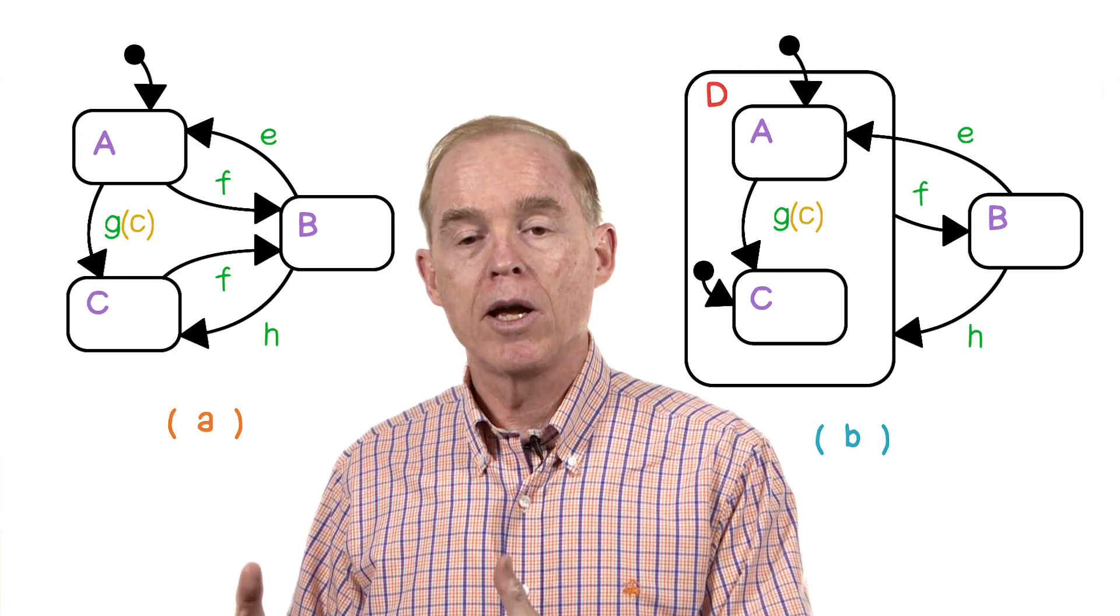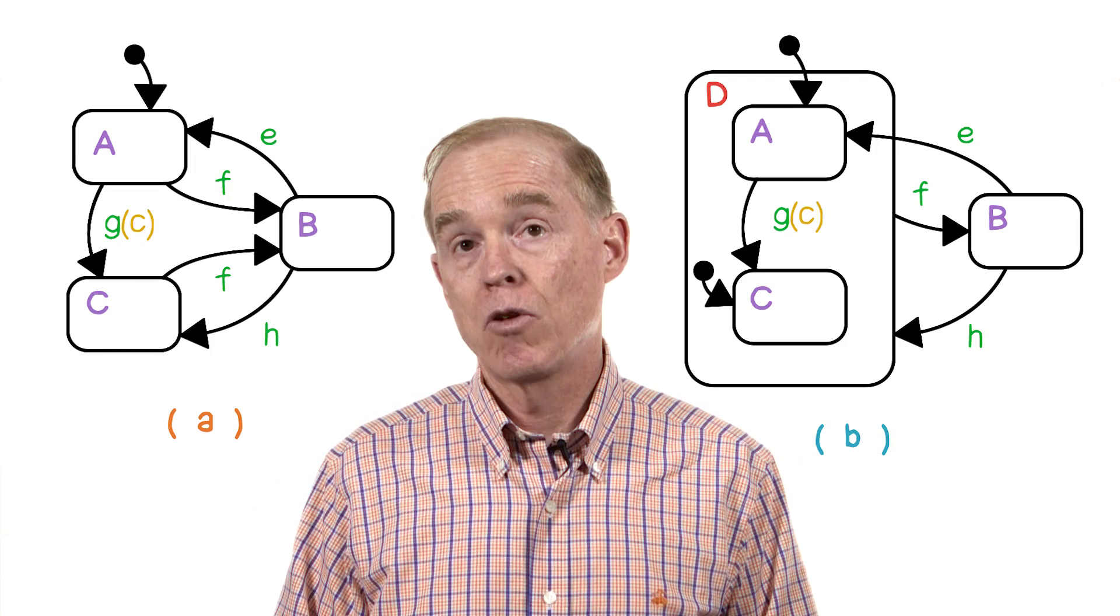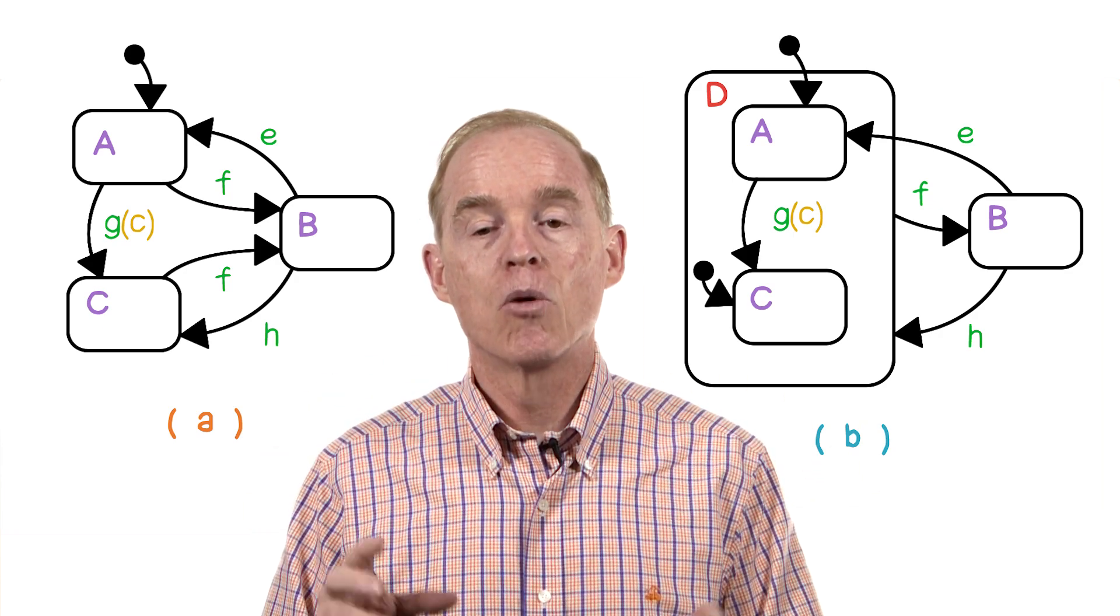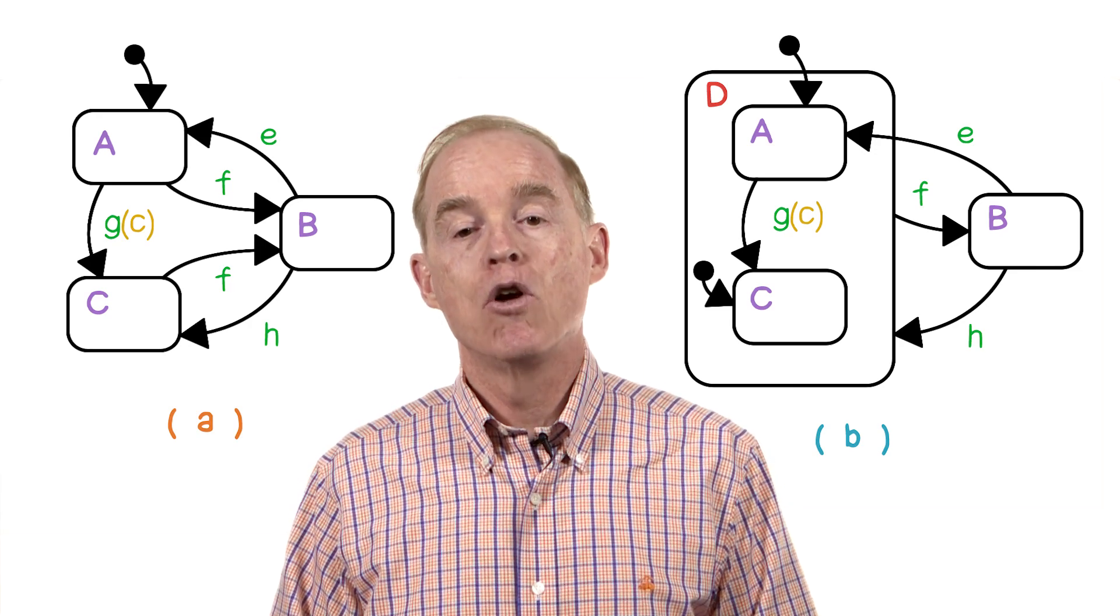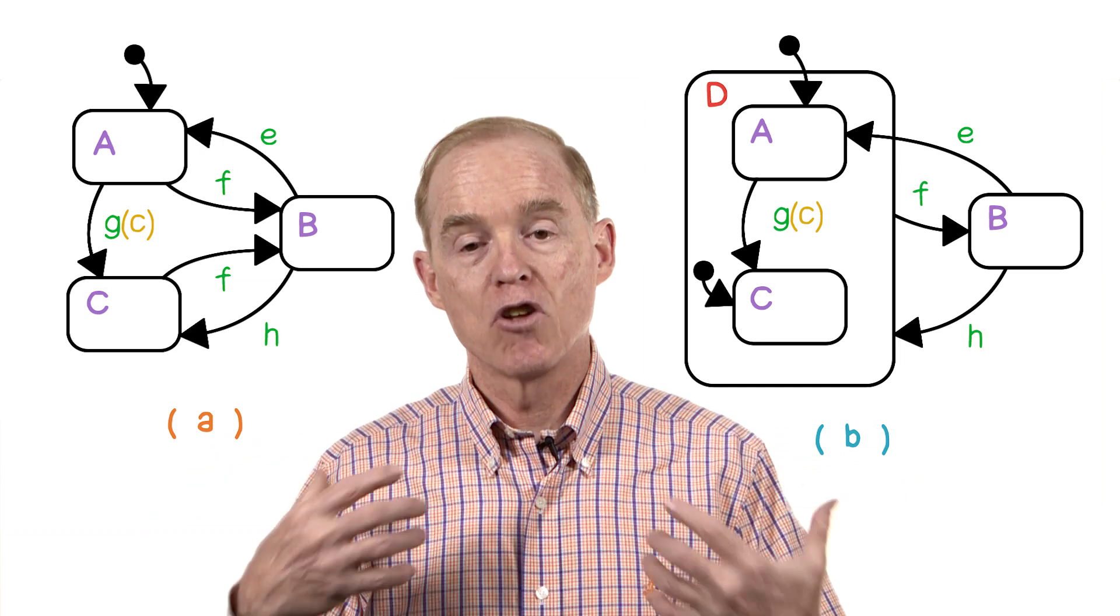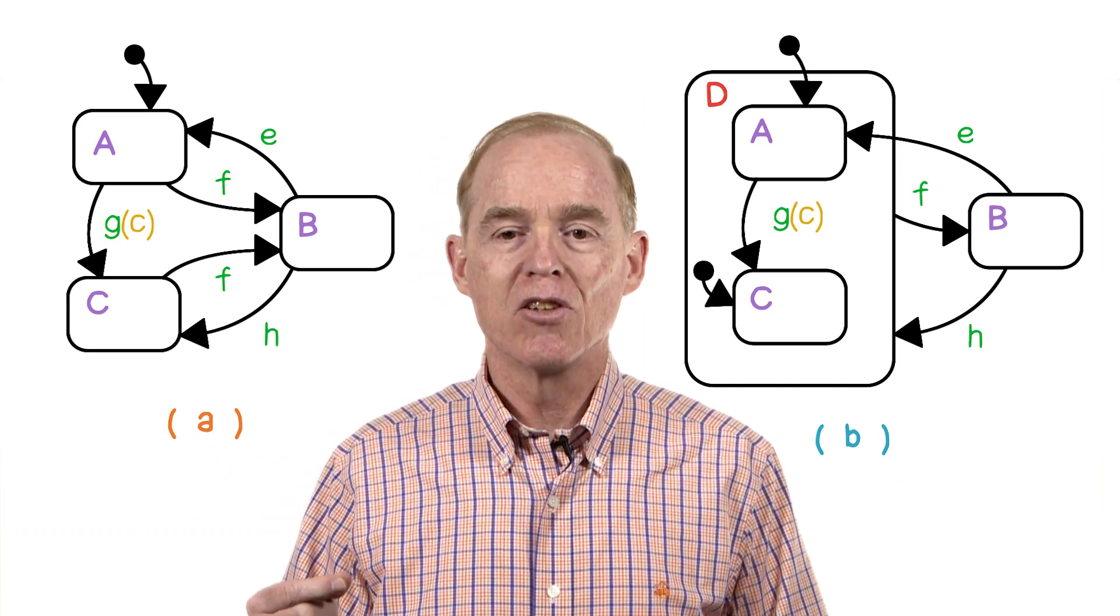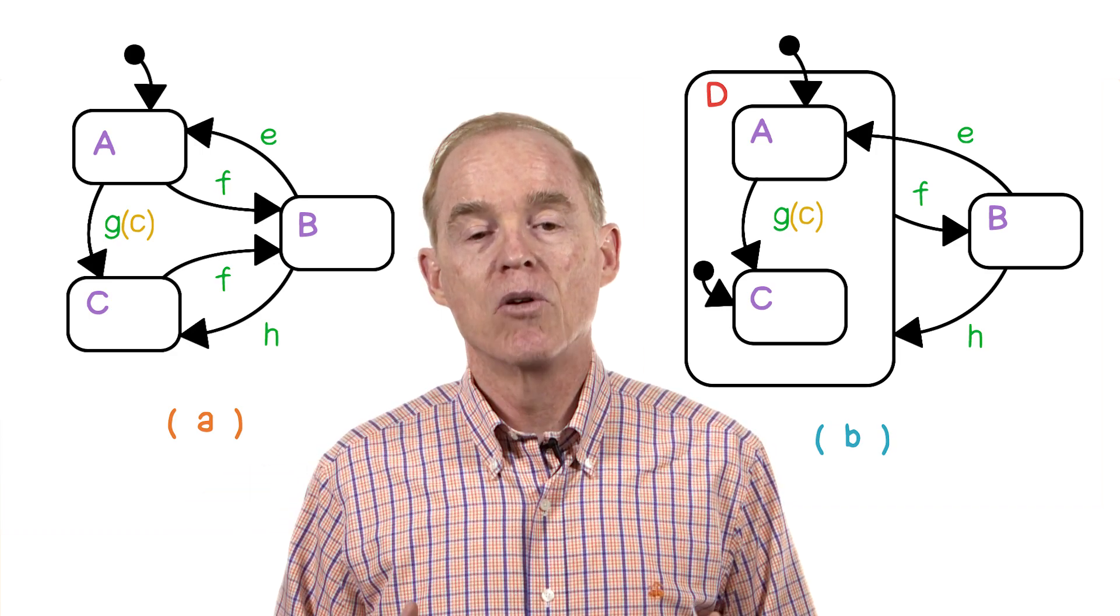The version on the right, labeled B, is a nested state transition diagram. A new state called D in the rectangle surrounds states A and C. A is still the default state for the state machine as a whole, but notice that some of the lines come out of D rather than coming out of either A or C.